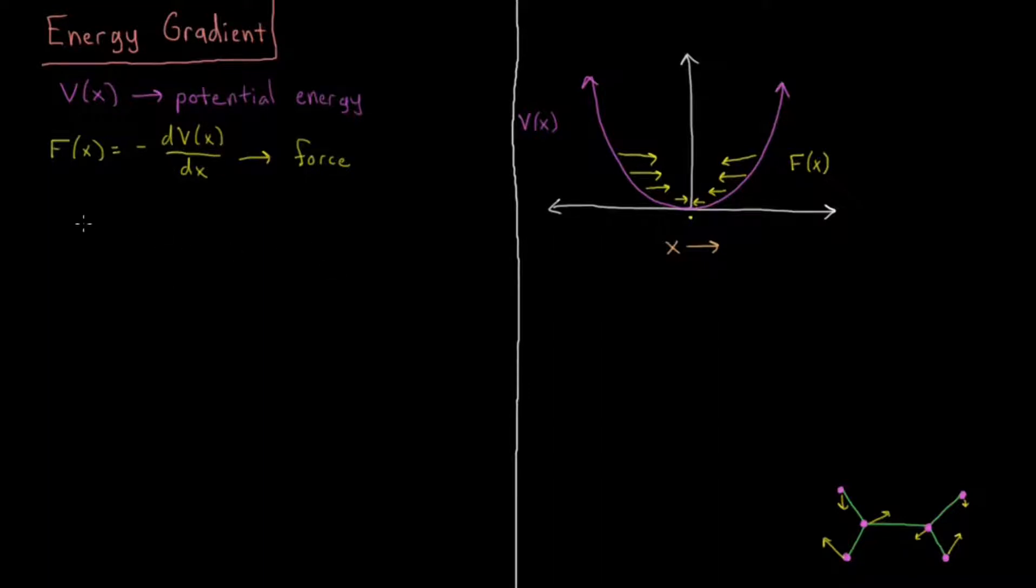So a specific example of this could be if V equals one-half kx squared. This would be the potential energy of a one-dimensional harmonic oscillator, which we have drawn over here.